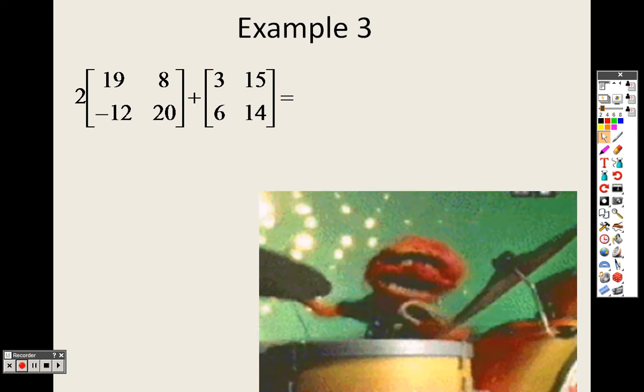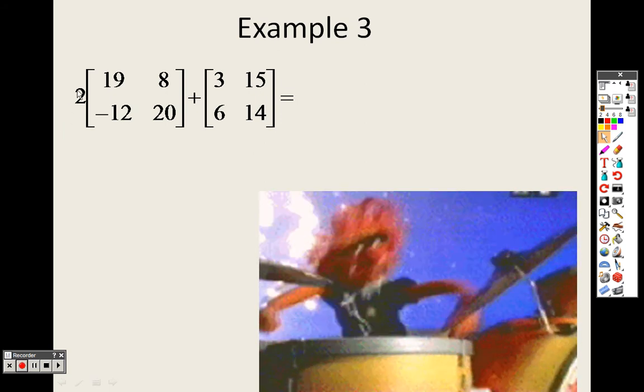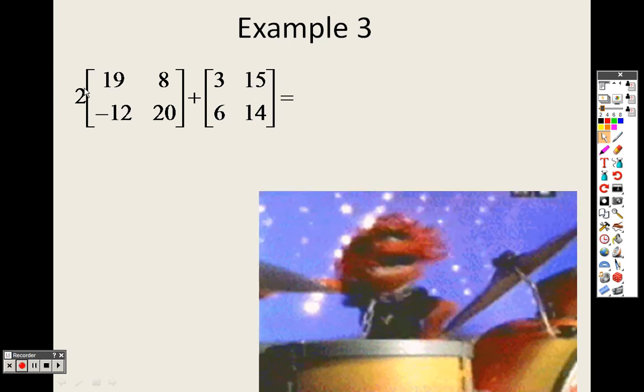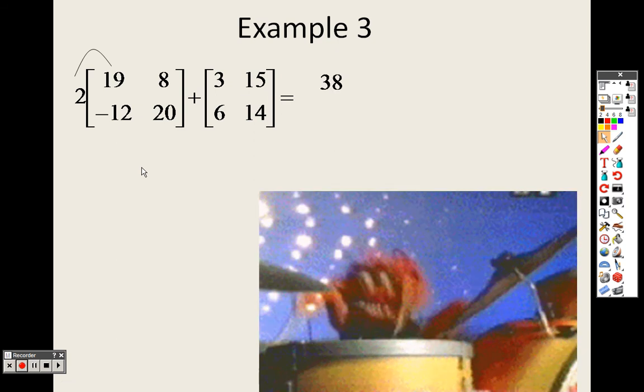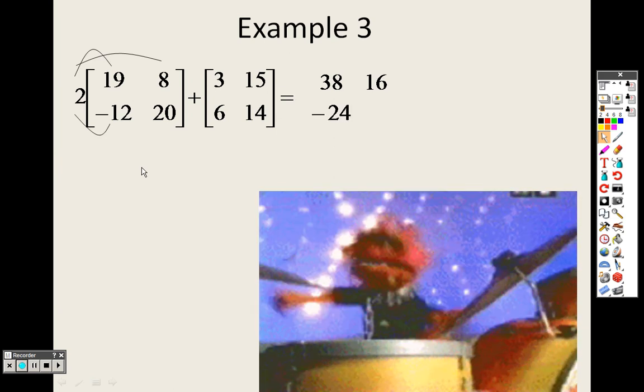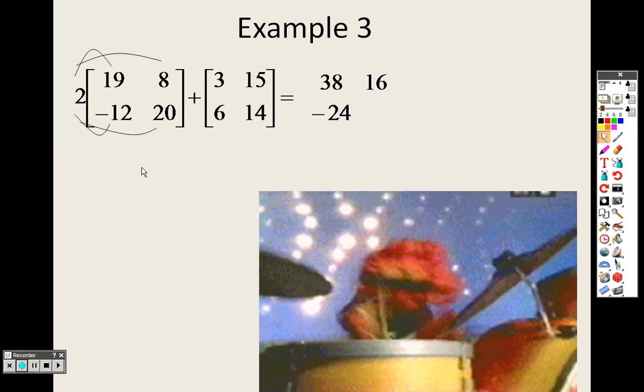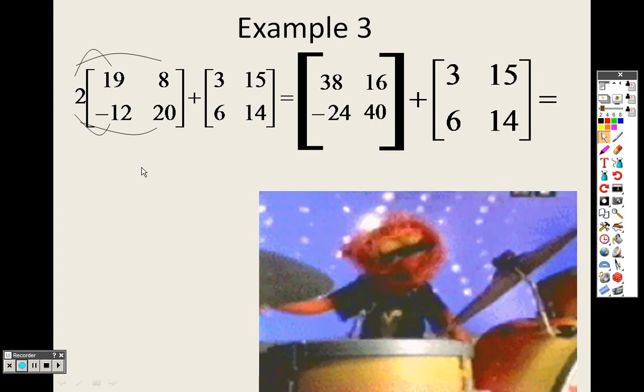Now with this, when you have a number on the outside like this, you have a 2, you have to distribute that through. So you need to distribute that 2 through to every single item. So it's 2 times 19, we're making a new matrix. That's 38. 2 times 8, that's 16. 2 times negative 12, that's negative 24. 2 times 20, that's 40.